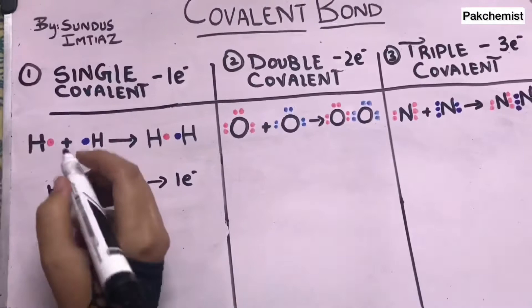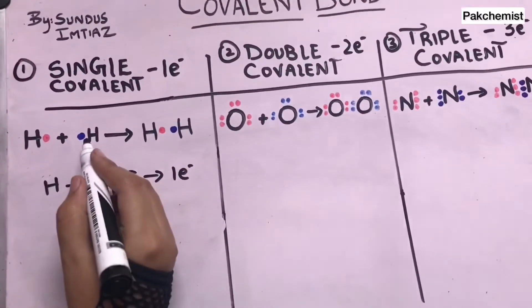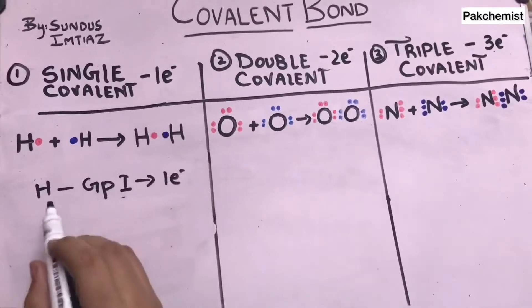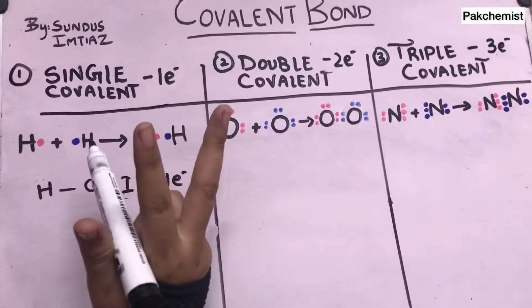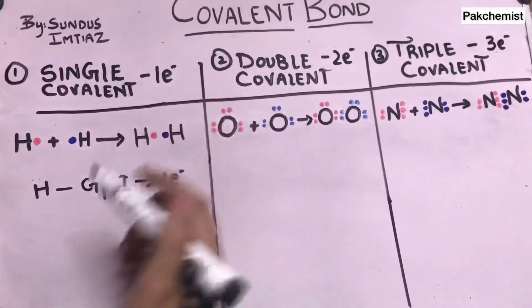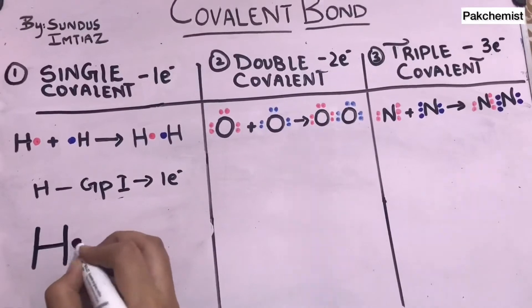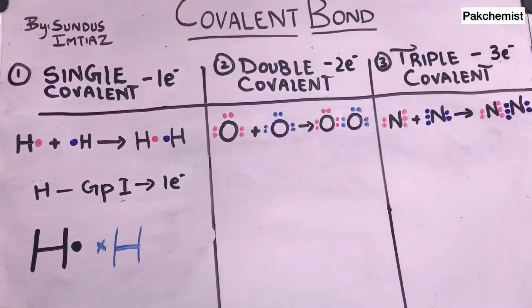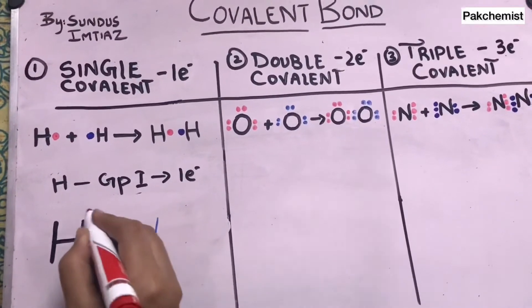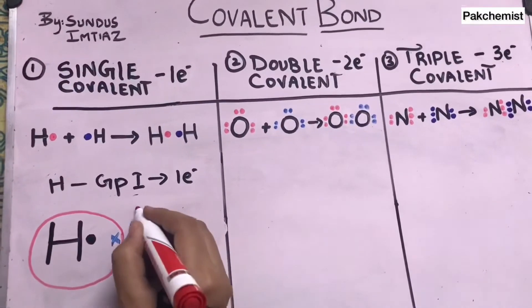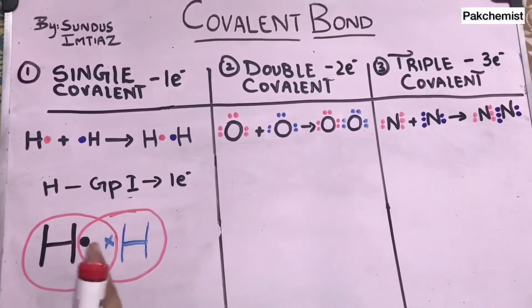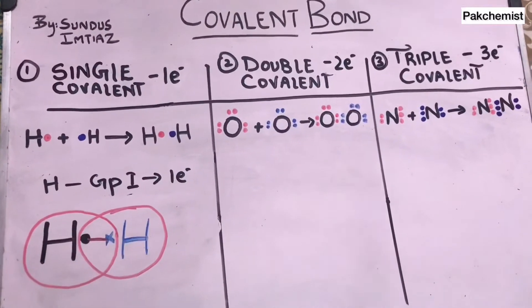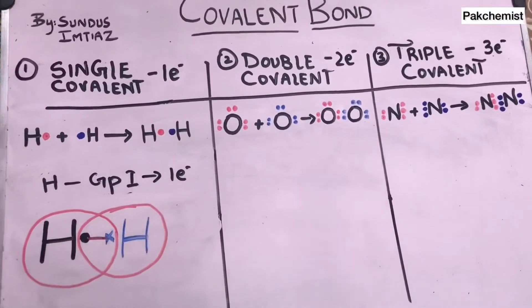Hydrogen has one electron and the other hydrogen also has one electron. When they bond with each other, they share one electron each to complete the outermost shell, because they are in the first shell and need two electrons — they already had one, so they share one with the other atom. From either side, each hydrogen now has two electrons, completing its first shell. This is the single covalent bond.